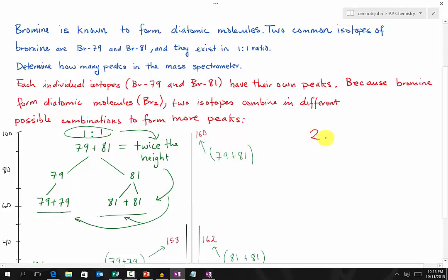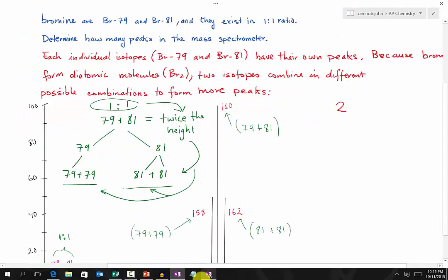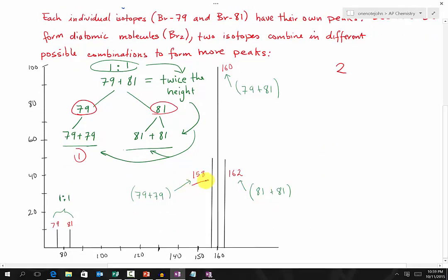Because bromine forms diatomic molecules, two isotopes combine in different possible combinations to form more peaks. If we look at 79, bromine-79 will combine with bromine-79 and give us one more peak at 158.